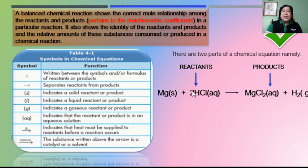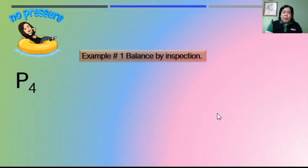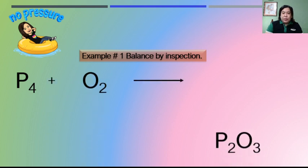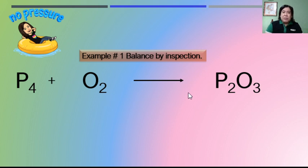This is an example of a complete balanced chemical equation. For example, phosphorus atoms react with oxygen gas to produce diphosphorus trioxide. In balancing by inspection, you look at the subscripts of the different species present on the reactant and product sides. We have four atoms of phosphorus and two atoms of oxygen on the reactant side, while on the product side there are two phosphorus atoms and three oxygen atoms — so they are not balanced.